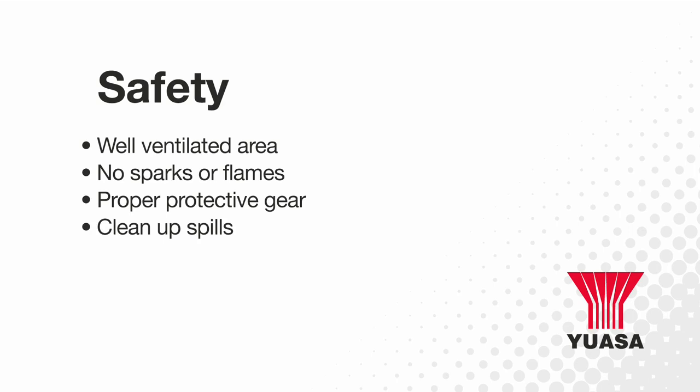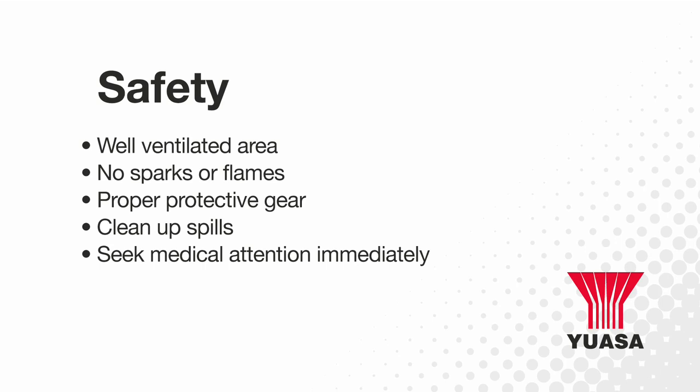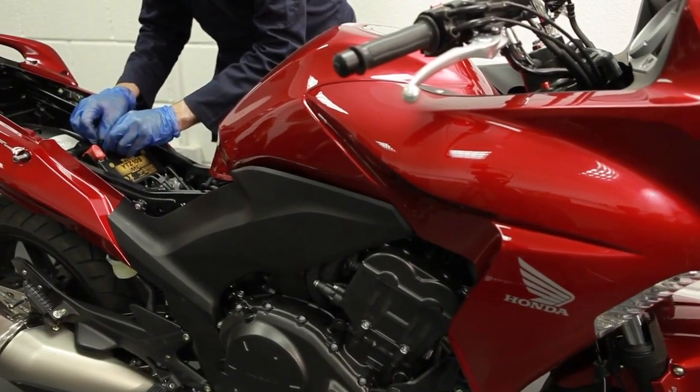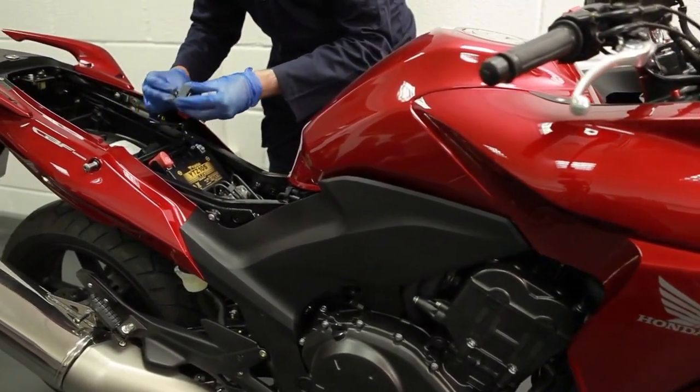Clean up any acid or electrolyte spills immediately and in the event that electrolyte may come into contact with eyes or skin, flush the area with water and seek medical attention immediately. A detailed list of safety precautions can be found in the YUASA technical manual.